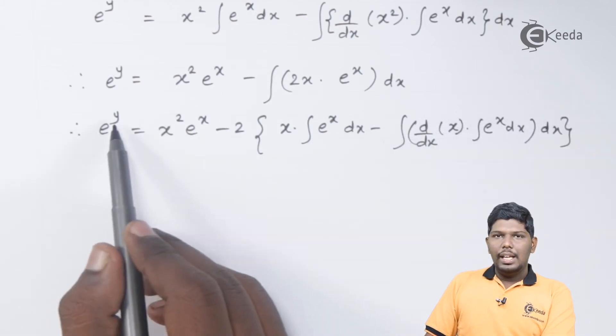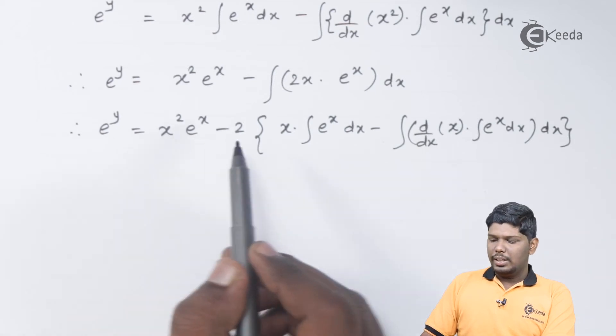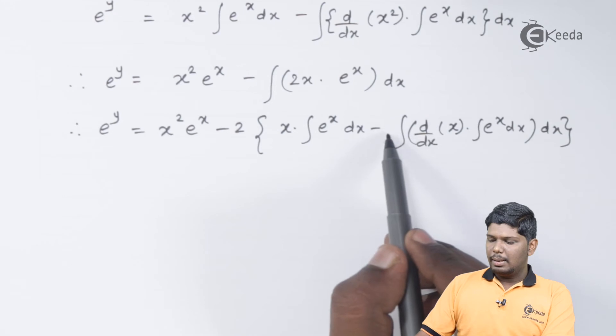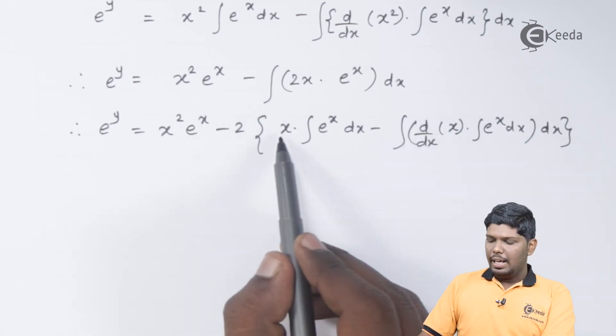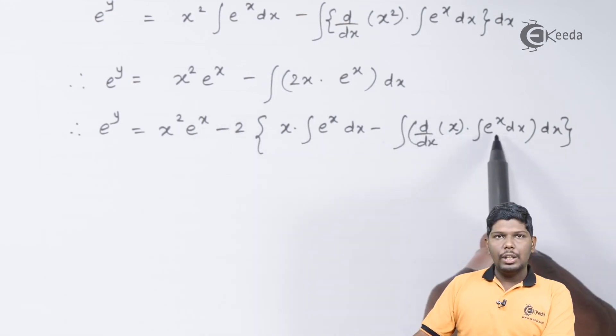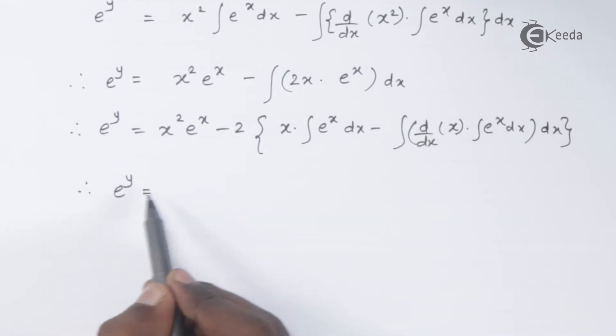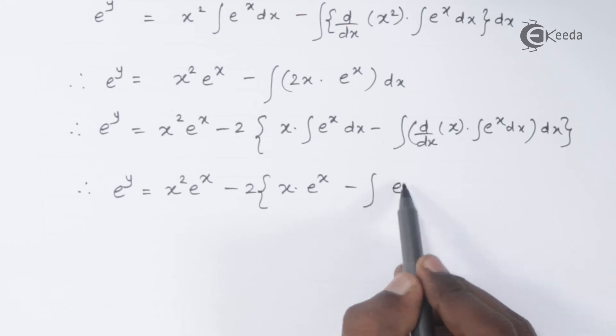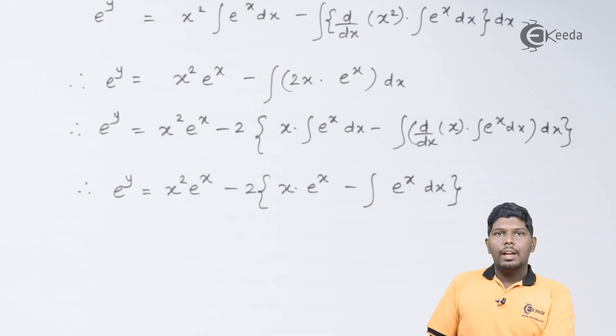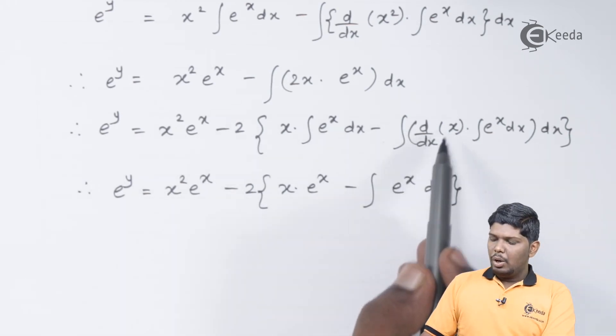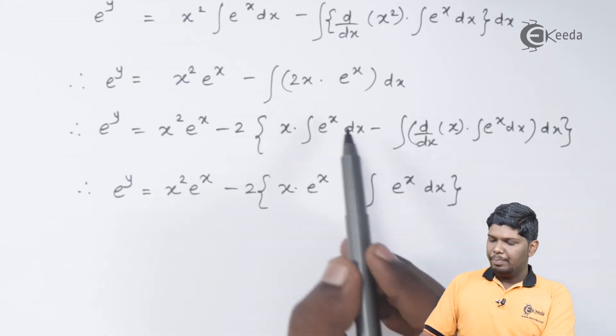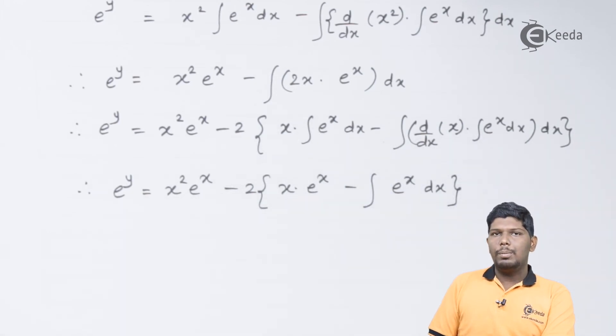This will give you e raised to y as x squared e raised to x minus 2 times x integral e raised to x dx minus integral of, derivative of x integral of e raised to x the over dx. In the next step, derivative of x will be 1, integral of e raised to x will be e raised to x only and here, integral of e raised to x will be e raised to x.